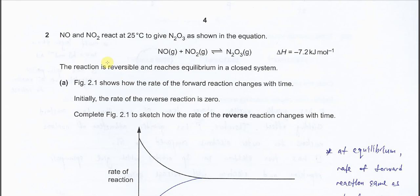Question 2. NO and NO2 react at 25 degrees C to give N2O3 as shown in this equation. ΔH is negative 7.2 kJ per mole. The reaction is reversible and reaches equilibrium in a closed system. You should know what a closed system means - the reactants and products cannot escape and will reach equilibrium at a certain time.